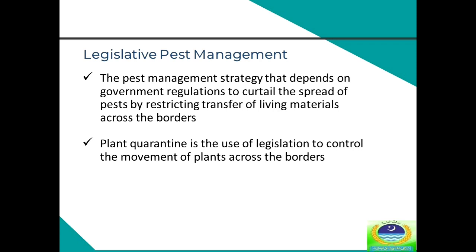Appropriate legislative and quarantine measures are required to prevent pests from crossing borders. Plant quarantine is the use of legislation to control the movement of plants through import and export across borders. If quarantine measures are not appropriate, this may lead to the introduction of new insect pests such as American bollworm or weed species such as Phalaris minor or dumbi sitti. It is critical to implement agriculture-related laws and ensure the quality of quarantine measures.